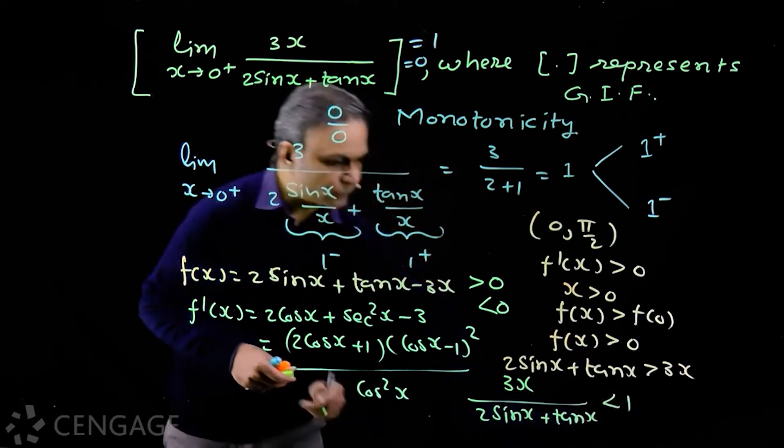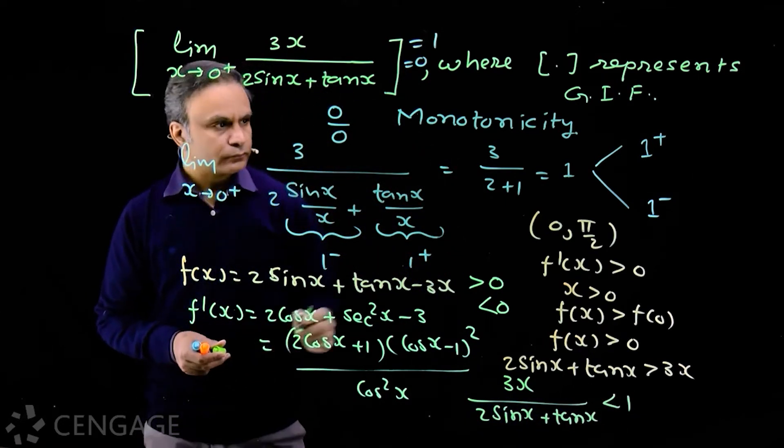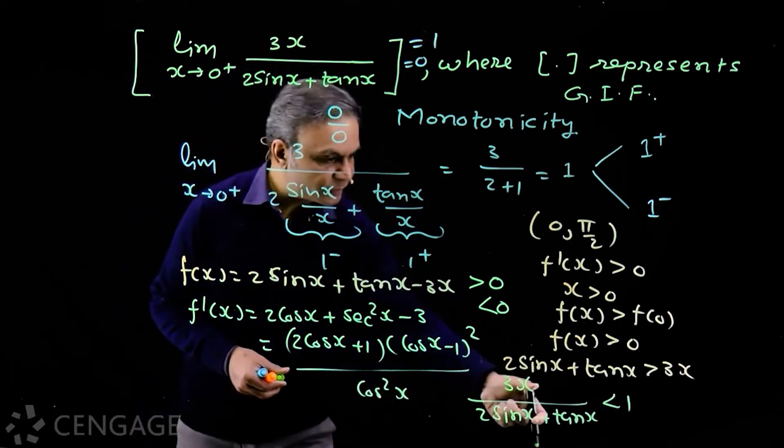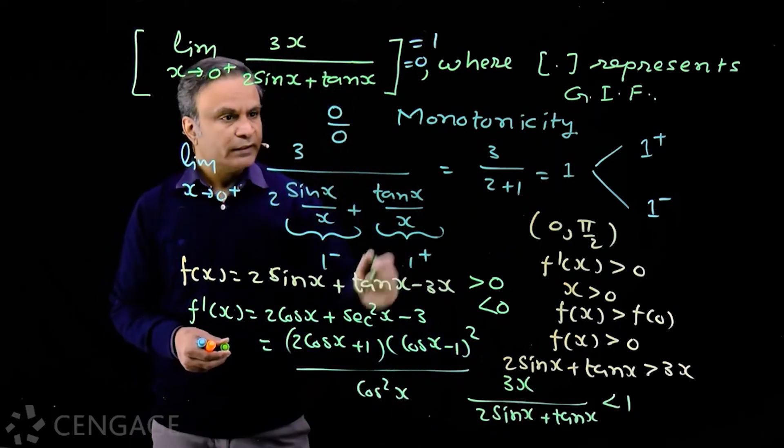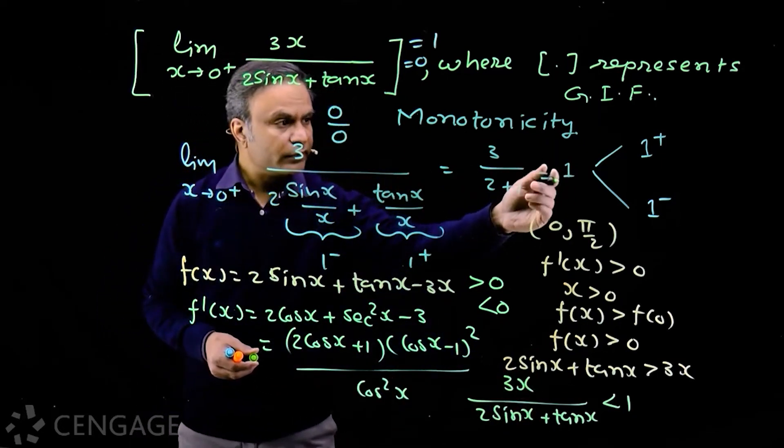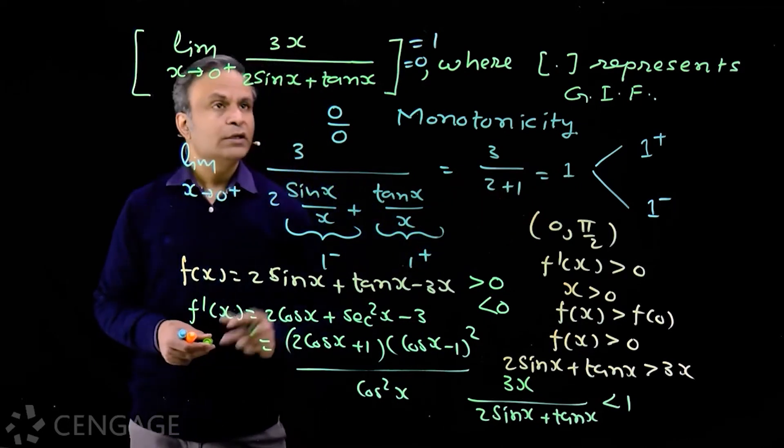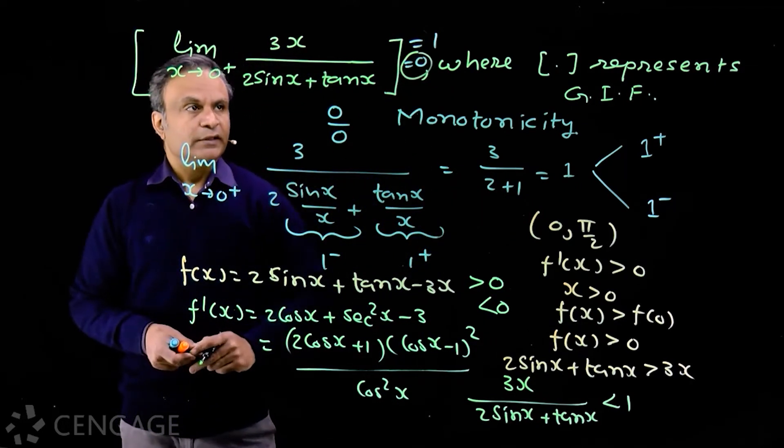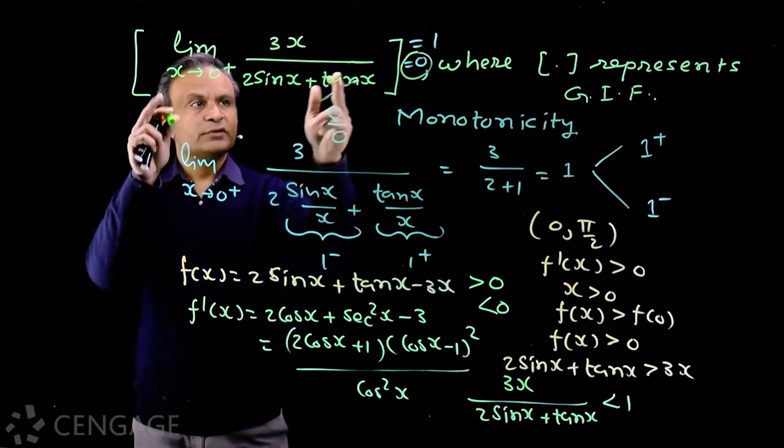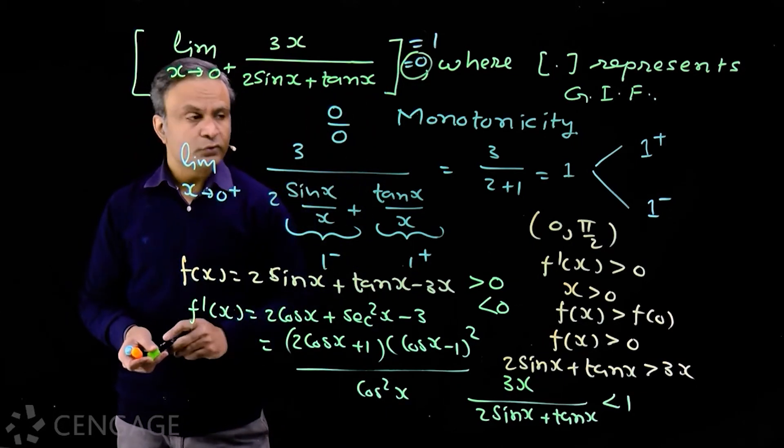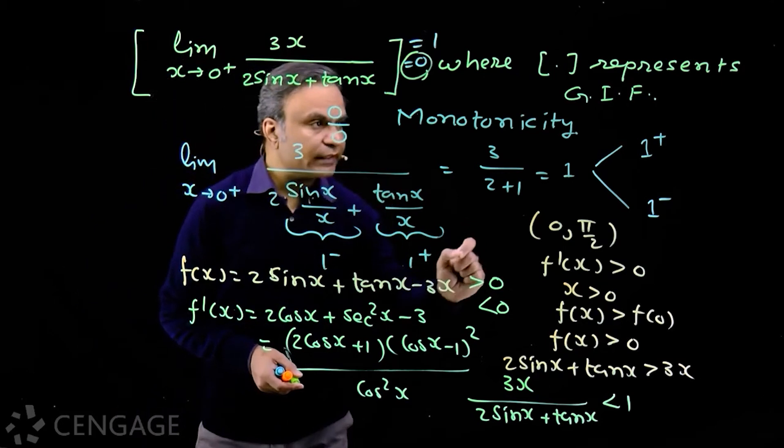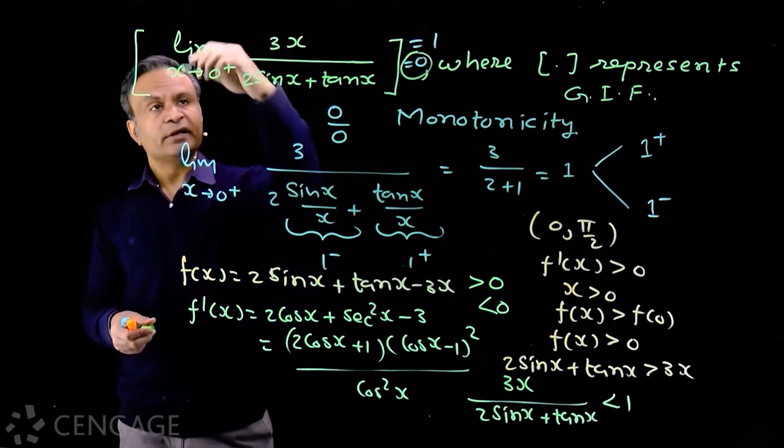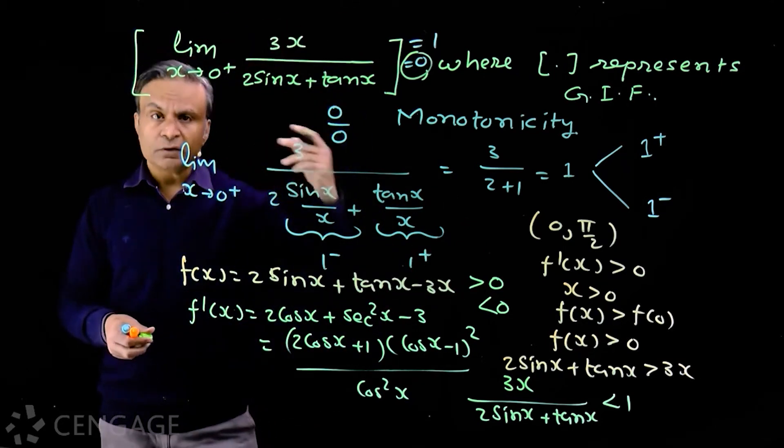So this limiting value will be 1-, because this ratio is less than 1. This limiting value is 1, but it is slightly less than 1, so this value will be 0. The greatest integer less than or equal to this limiting value is 0, not 1. So you see, here monotonicity helps us check whether this limiting value is 1+ or 1-.